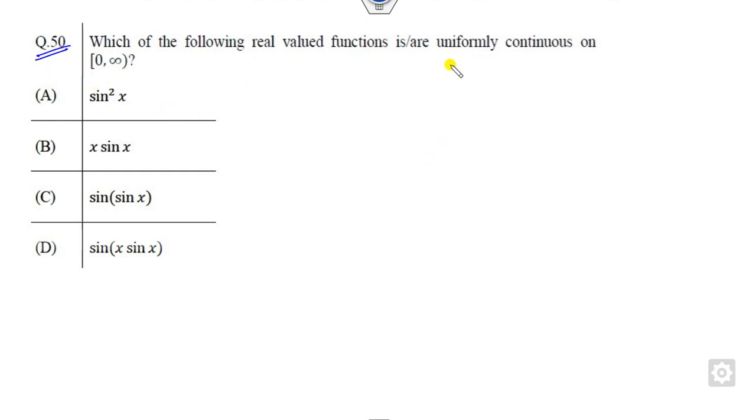This is a question related to uniform continuity. I will tell you a shortcut trick. Any function F is said to be uniformly continuous when this condition is satisfied: whenever you prove that its first derivative is bounded, less than 1, then it is uniformly continuous.